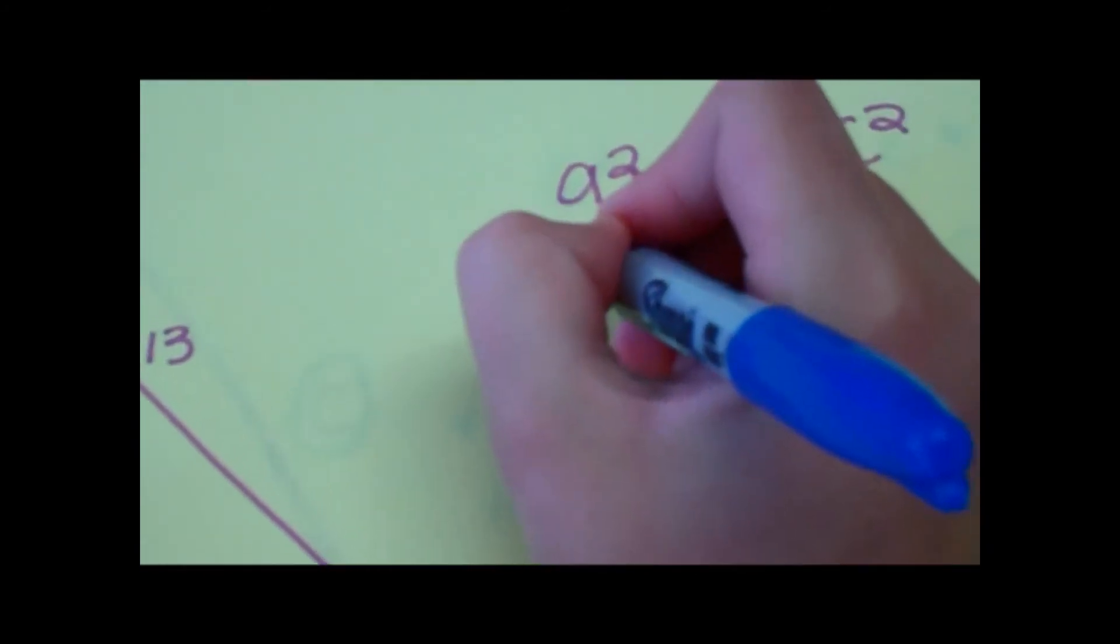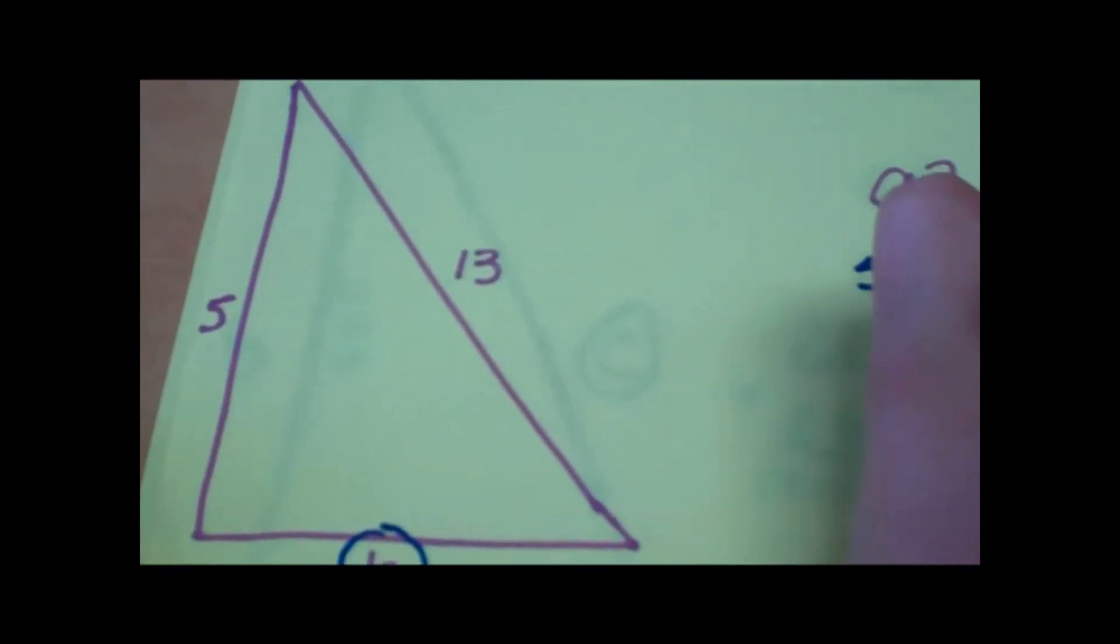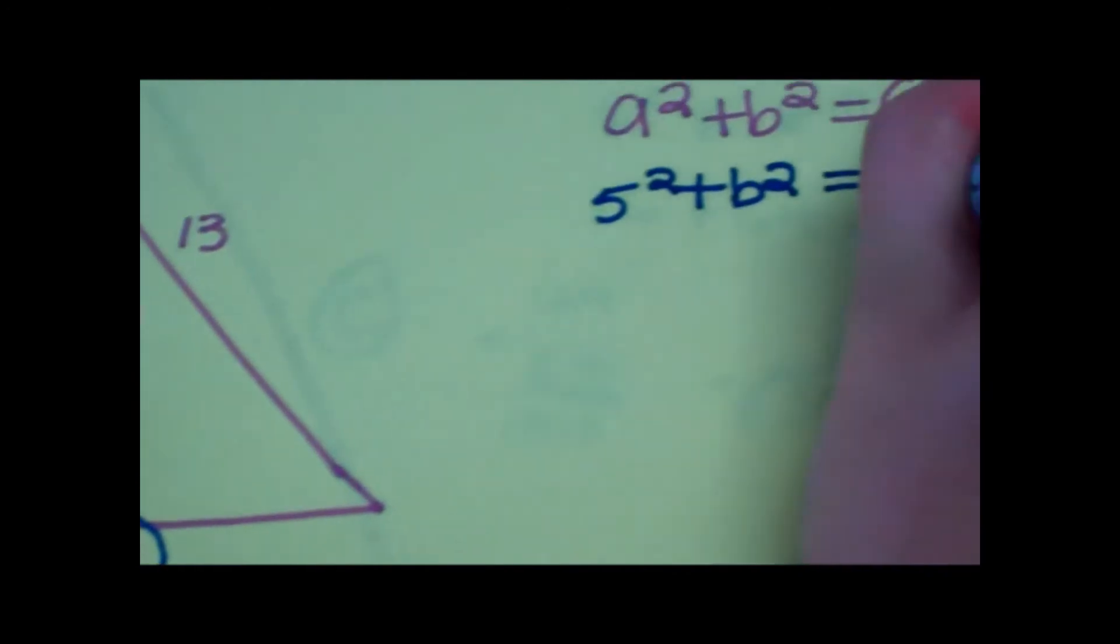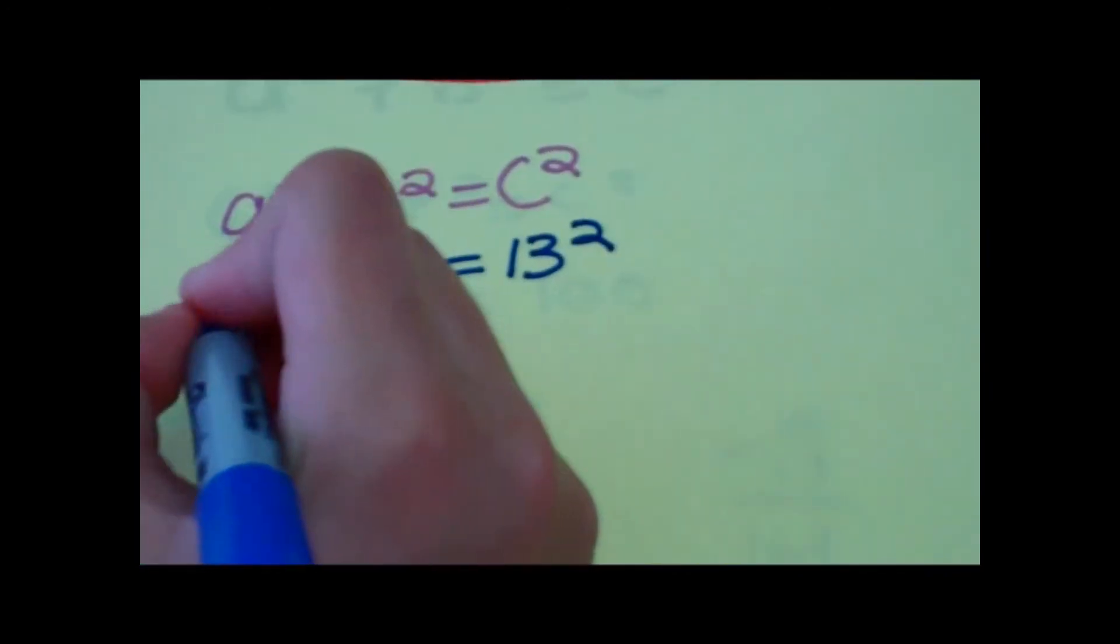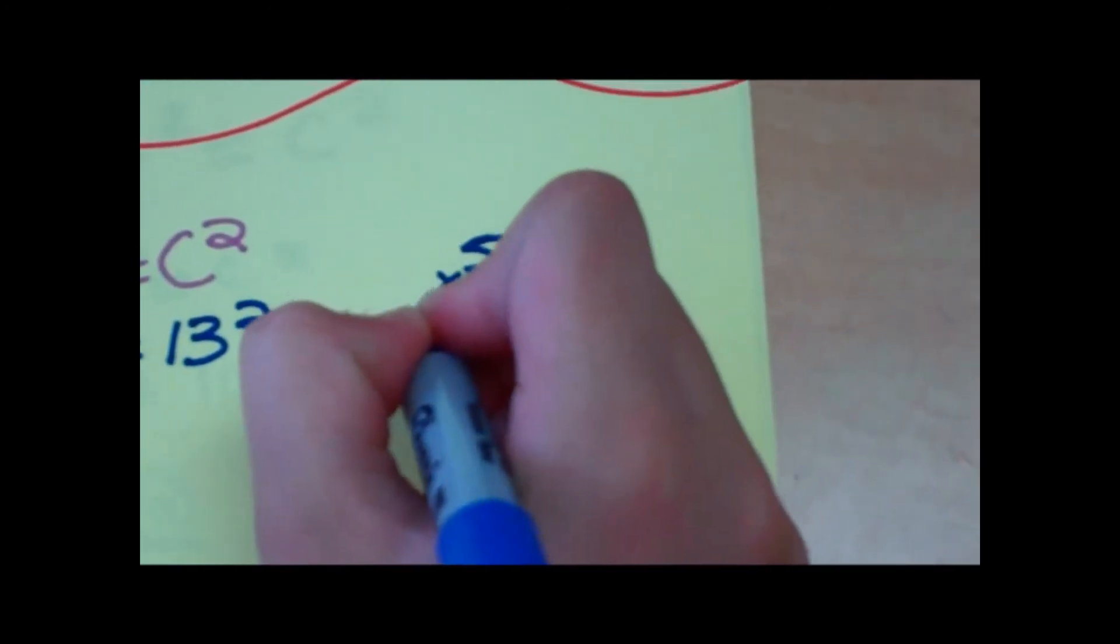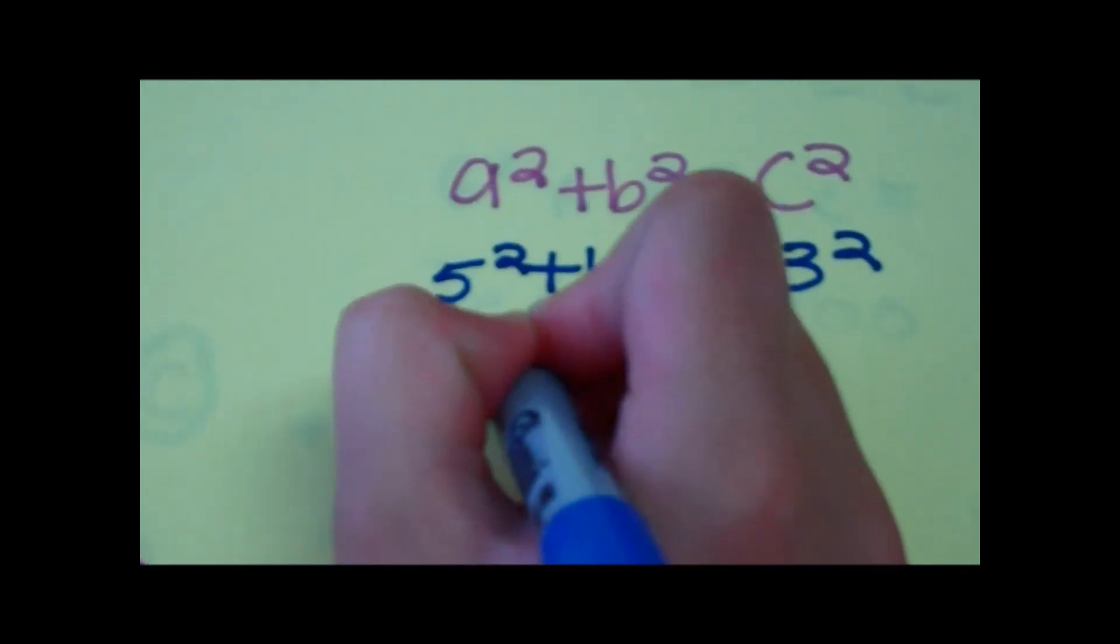A squared, which is 5, plus B squared, which we don't know yet, and 13 squared. 5 times 5 equals 25. We still don't know what B is. And 13 times 13 is 169.